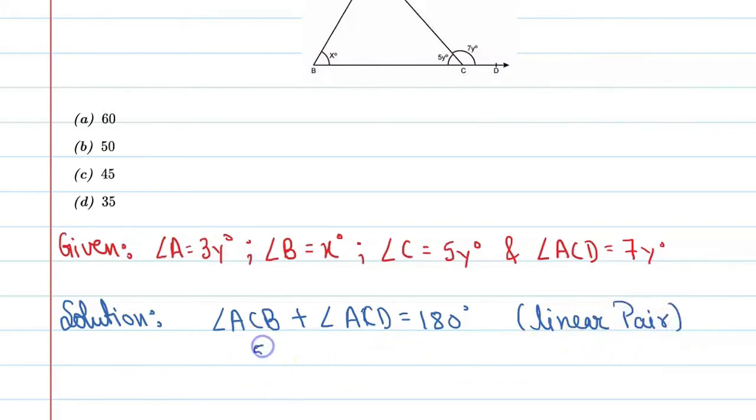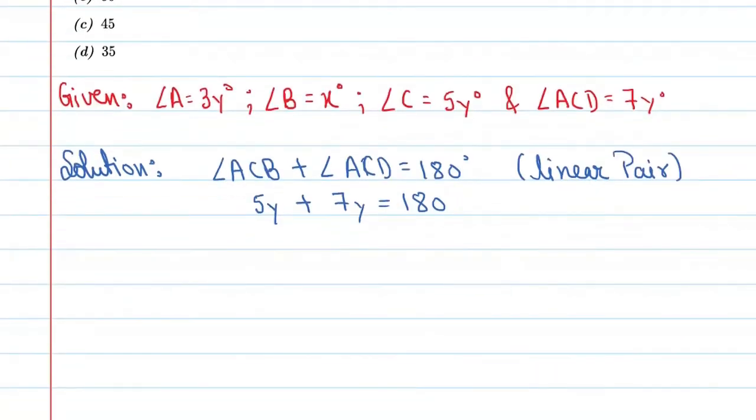So this is 5Y, this is 7Y, and it equals 180. So if you find the value, we can see it is 12Y equal to 180. So Y is equal to 180 divided by 12. Cancel and it is equal to 15 degrees.